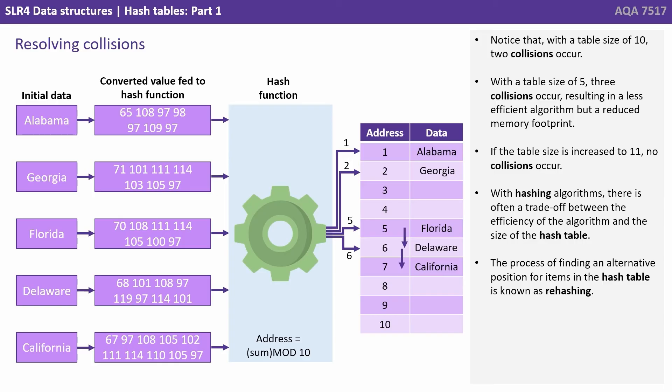The process of finding an alternative position for items in the hash table is known as rehashing.